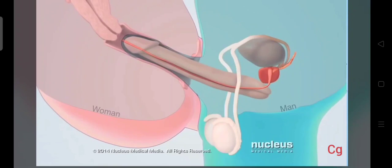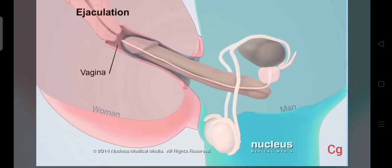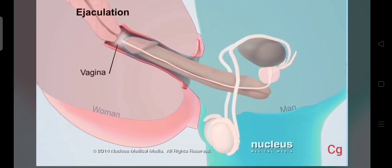During sex with a woman, this process called ejaculation deposits semen in her vagina.